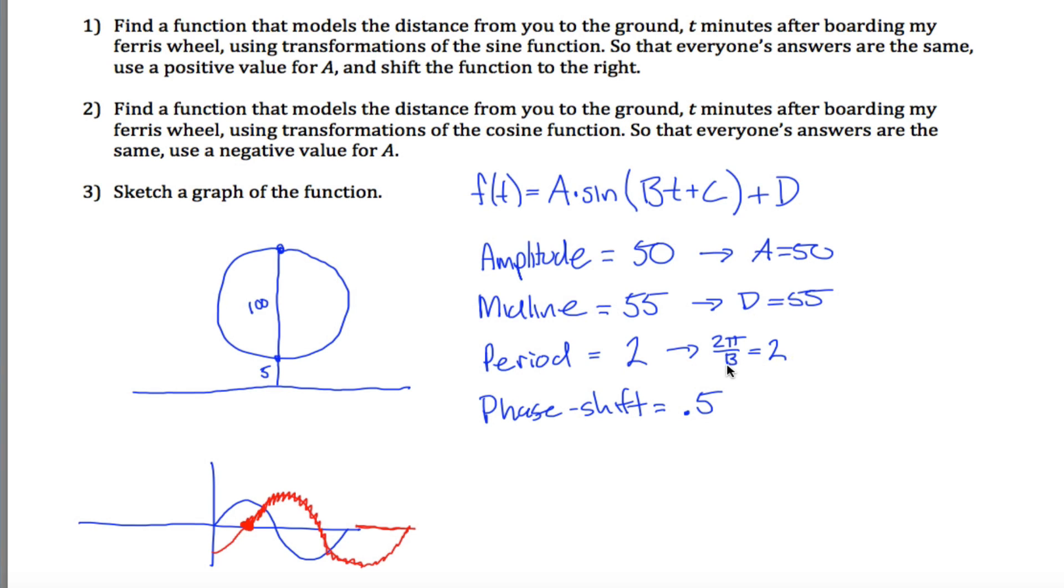The period, 2 pi divided by B is always equal to the period, which is equal to 2. So you know the period's 2, what you're trying to solve for is B. If you solve this equation for B, you get that B must be equal to pi. That's because 2 pi divided by pi is just 2, or because you multiply both sides by B and then divide by 2, and you get that B is equal to pi.